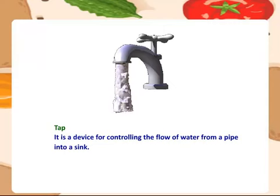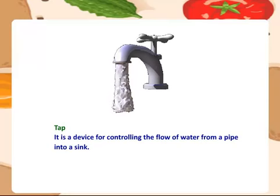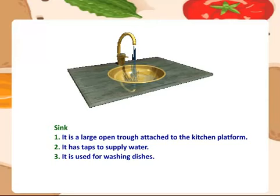Tap — it is a device for controlling the flow of water from a pipe into a sink. Sink — it is a large open trough attached to the kitchen platform. It has taps to supply water. It is used for washing dishes.